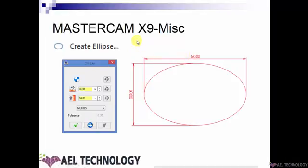Next we will see how to create an Ellipse. Here you need to define the minor radius and the major radius, and based on your requirement you will get the ellipse shape. If you are happy with it, click OK.